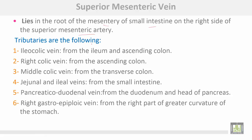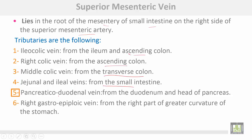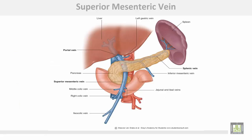The tributaries of the superior mesenteric vein are: number one, the ileocolic vein from the ileum and ascending colon; the right colic vein from the ascending colon; the middle colic vein from the transverse colon; jejunal and ileal veins from the small intestine; the pancreaticoduodenal vein from the duodenum and head of the pancreas; and the right gastro-epiploic vein from the right part of the greater curvature of the stomach. The superior mesenteric vein passes on the right side of the superior mesenteric artery at the root of the mesentery, uniting with the splenic vein behind the neck of the pancreas to form the portal vein.